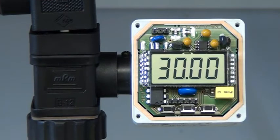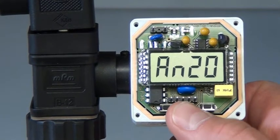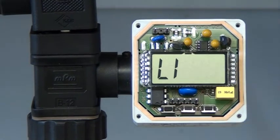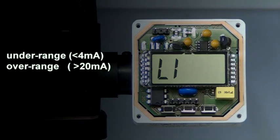The third step in the programming sequence is error code. To access error codes, press the B button until the display reads L1. The error code function on the 1800 digital indicator alerts the user when an under range less than 4 milliamps or over range greater than 20 milliamps output has occurred. An over range condition will show F1 in the display, while an under range condition will show F2.